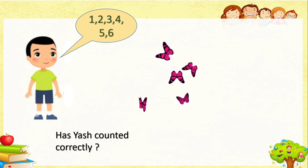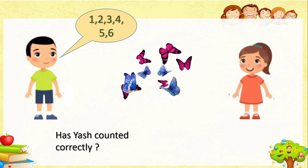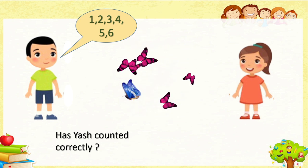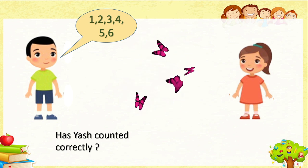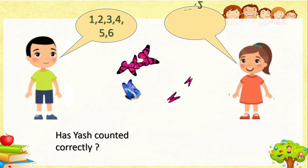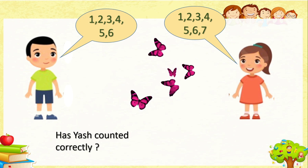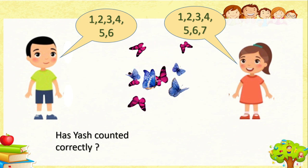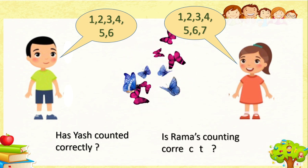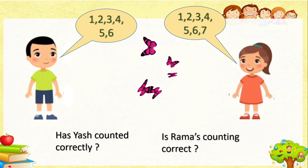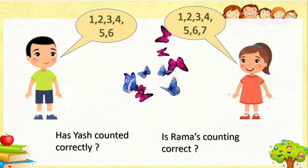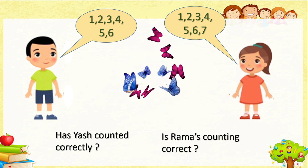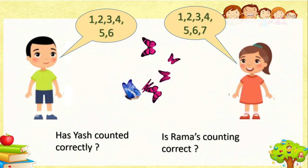We will ask one more girl named Rama to count the same flying butterflies. Let us see what Rama counts: one, two, three, four, five, six, seven. She added one more to the earlier count. Is Rama's counting correct? We don't know, because these butterflies are flying here and there — they are not in one place.